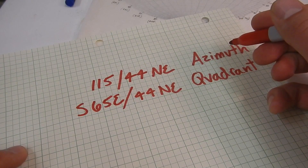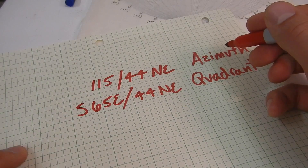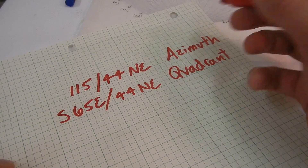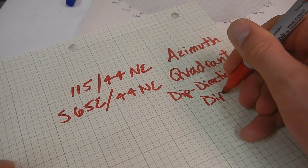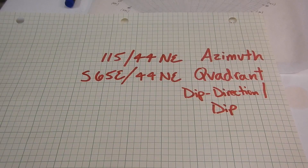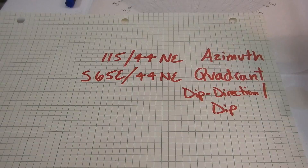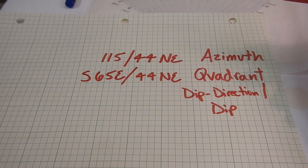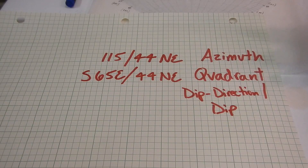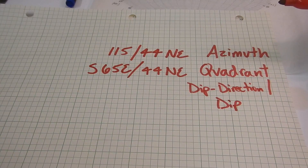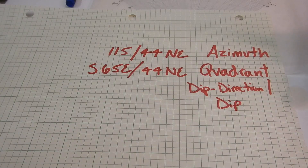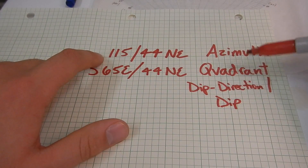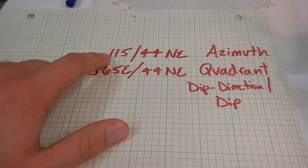Now we'll cover dip direction/dip, which you'll see on the lab on Friday as well as the take-home lab from last Friday. This is a third way to record the orientation of a plane. It's preferred because you don't have to deal with two strike numbers for the same strike, and it already gives you the dip direction. Dip direction is simply the azimuth angle in the direction the plane is dipping.